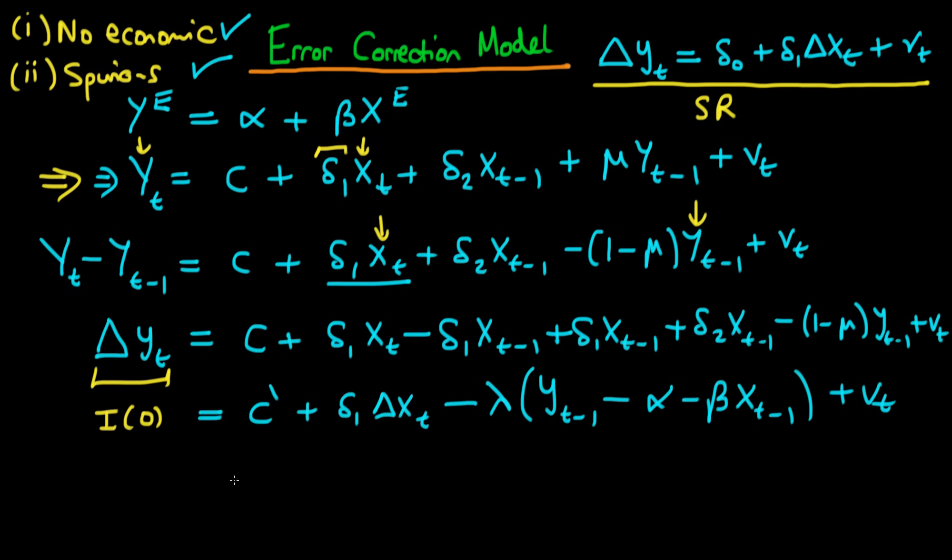So the idea here is that lambda is actually equal to 1 minus mu. You can see that quite quickly because essentially the only coefficient I've got on yt minus 1 is minus lambda and minus lambda has got to be equal to minus 1 minus mu so that's easy enough. The alpha and beta are slightly harder. I'm not going to show the alpha here but the beta is as it happens just equal to delta 1 plus delta 2 all divided through by 1 minus mu.